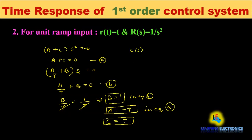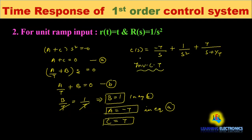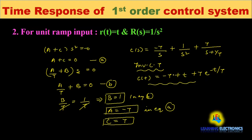Therefore C(s) = A/s + B/s² + C/(s + 1/T) = −T/s + 1/s² + T/(s + 1/T). Now taking the inverse Laplace transform: the inverse of 1/s is 1, inverse of 1/s² is t, and inverse of 1/(s + 1/T) is e^(−t/T). So the time response is c(t) = −T + t + T·e^(−t/T).